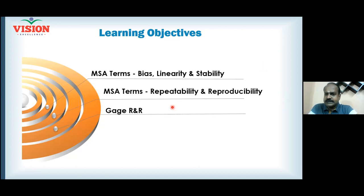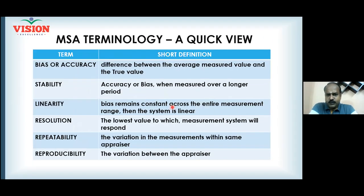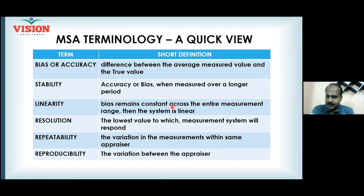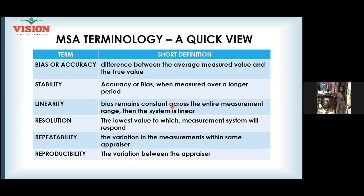A quick view of MSA terminologies. A measurement system is a set comprising the gauge, the appraiser involved, the part being measured, the operational definition, and the environment — all of these are responsible for measurement error. That is why we call it measurement system analysis, not measuring equipment analysis. Any component of the system could be a source of the problem.